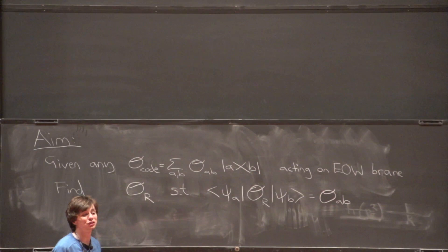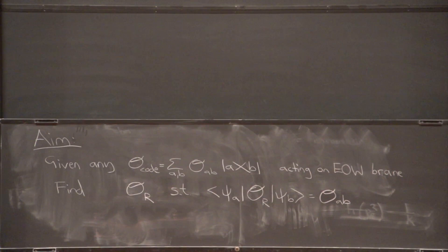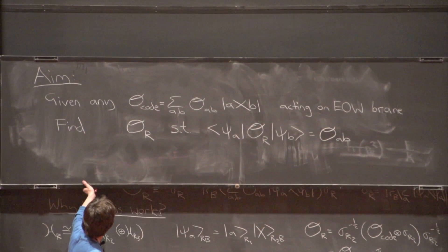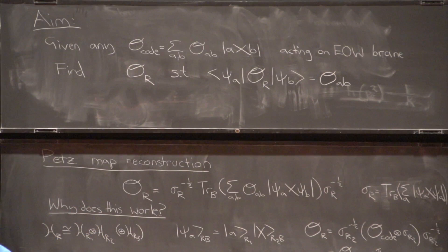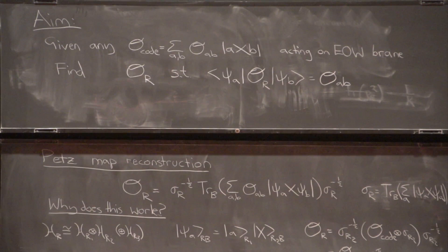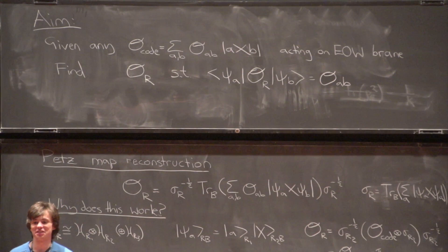The first question is what operator should we use. What we're going to use is something called the Petz map reconstruction. This is a word that, for whatever reason, seems to scare high energy people, because it feels very quantum information-y. I want to try and convince you that this is the stupidest thing you could do that isn't so stupid it just won't work.